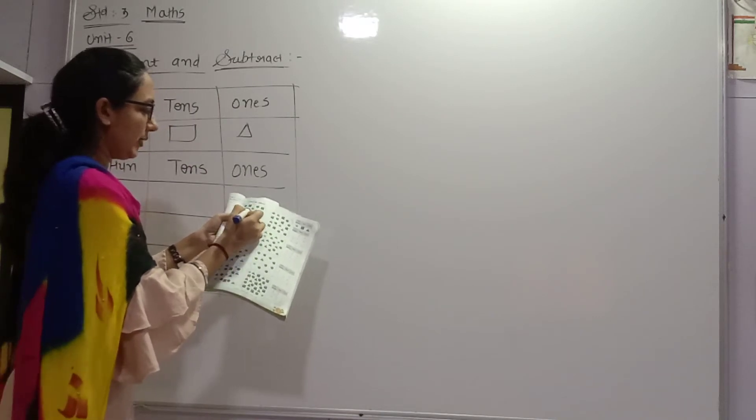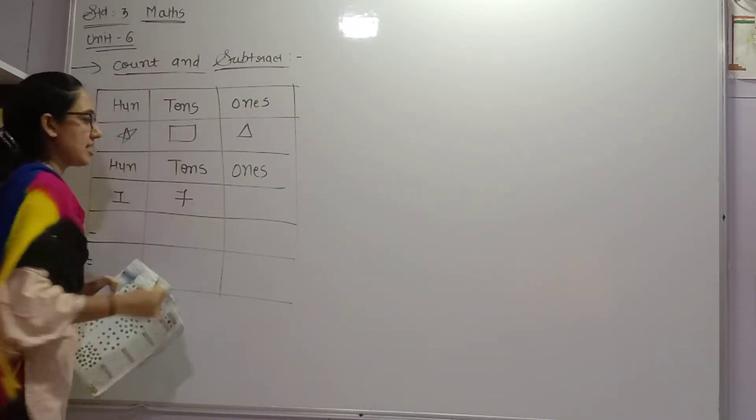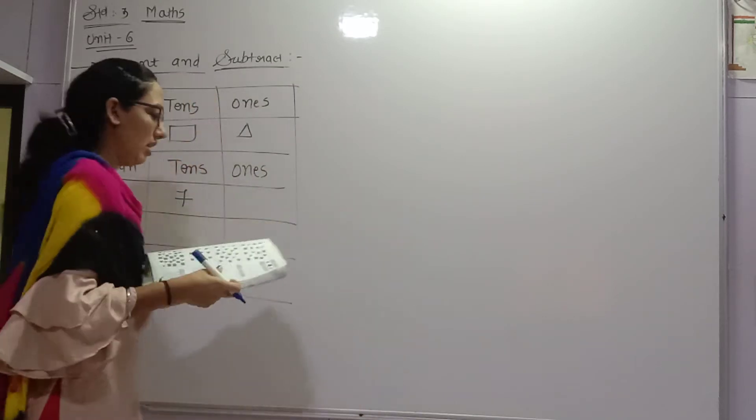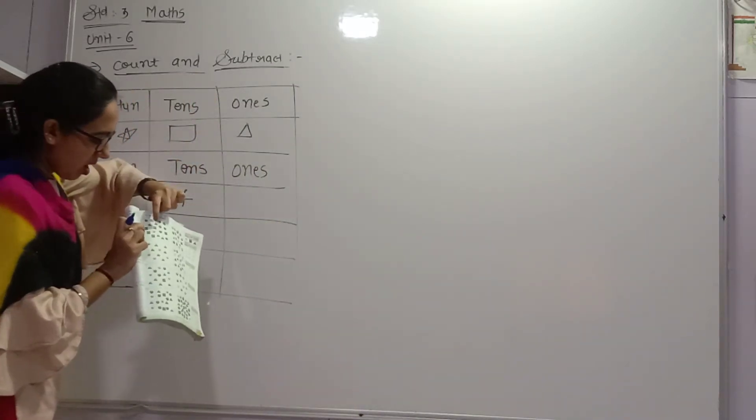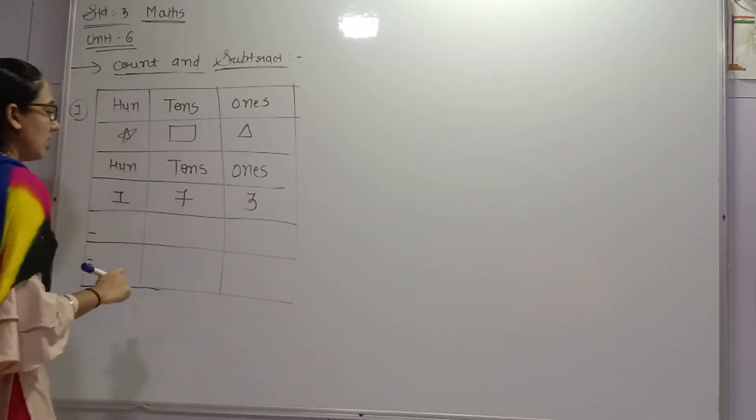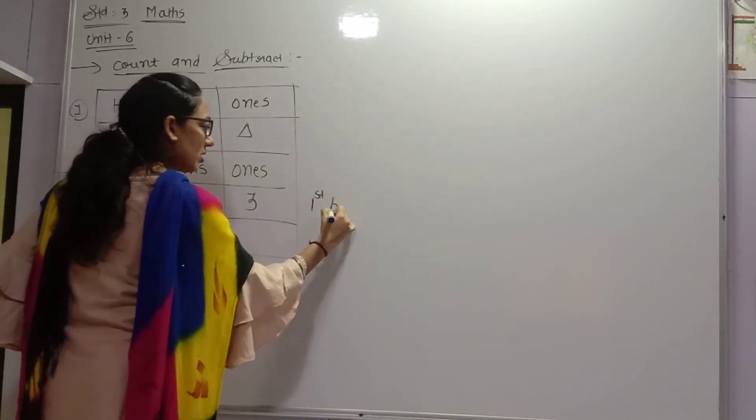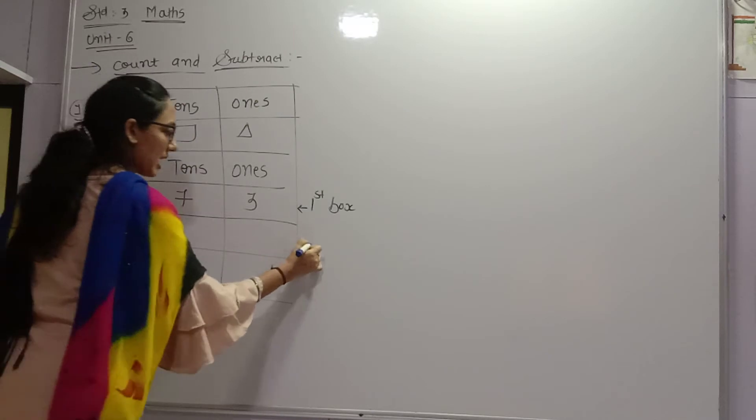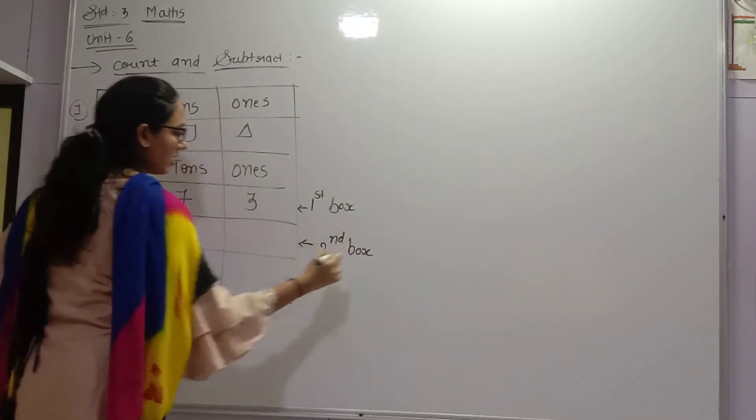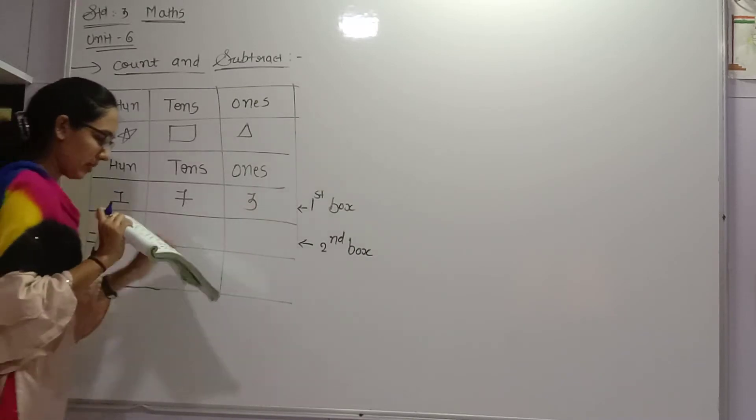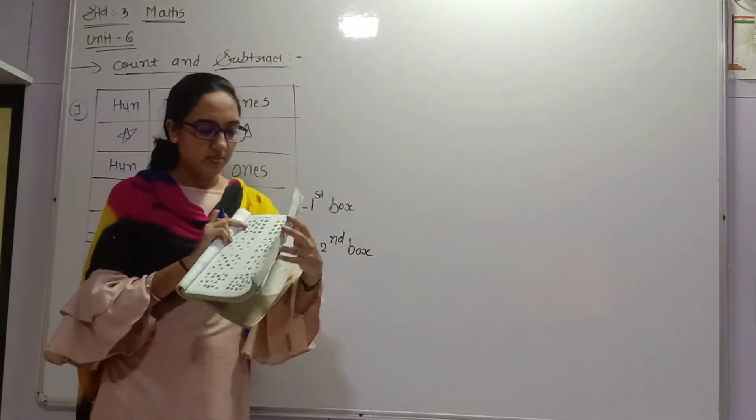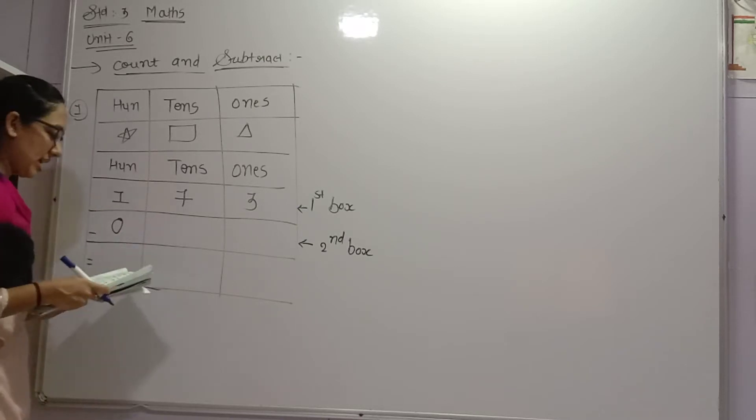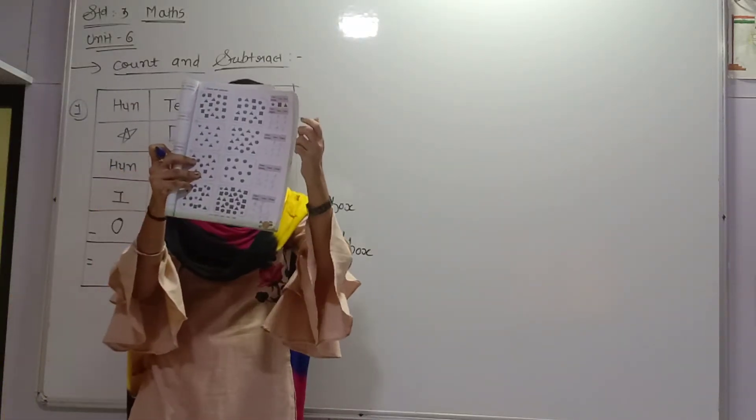1, 2, 3, 4, 5, 6, 7. So we have 7. Once we have seen, what do we have to do? Triangle. So we have to do this in the first box: 1, 2, 3. So we have 3. So this is the first box we have counted here.